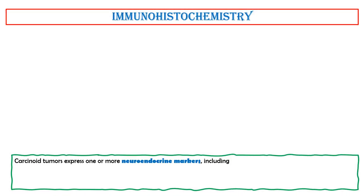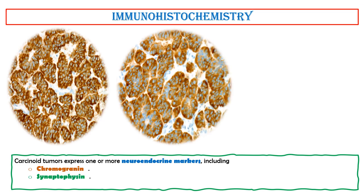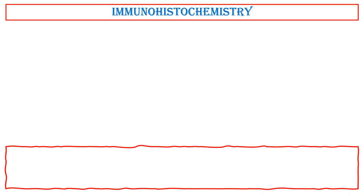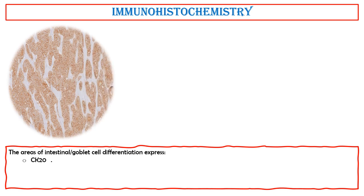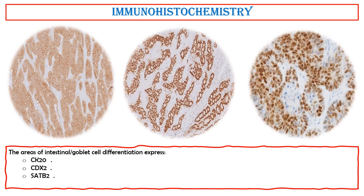Carcinoid tumors express one or more neuroendocrine markers, including Chromogranin (diffuse cytoplasmic staining), Synaptophysin (diffuse cytoplasmic staining), and N-CAM/CD56 (diffuse cell membrane staining). The areas of intestinal goblet cell differentiation express CK20 (diffuse cytoplasmic staining) and CDX2 (diffuse nuclear staining).